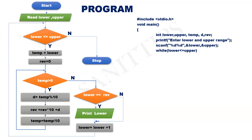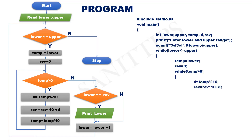Yes part: temp is equal to lower, rev equal to 0. Next it is again a condition and part of a loop: while temp greater than 0 — D equal to temp mod 10, rev equal to rev into 10 plus D, temp equal to temp divided by 10. Close the inner while loop. Now go to the no part — it is a condition but part of a selection, so use if: if lower is equal to rev. Yes means print lower — printf %d, lower. End of yes part, close if body.